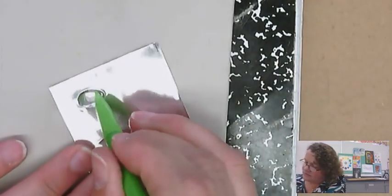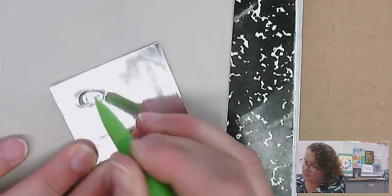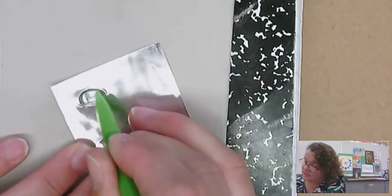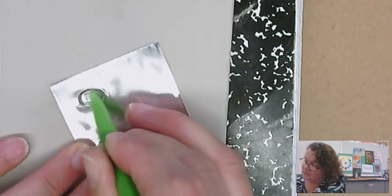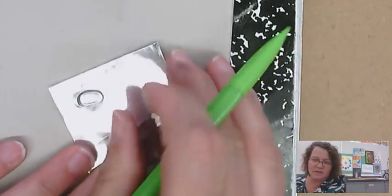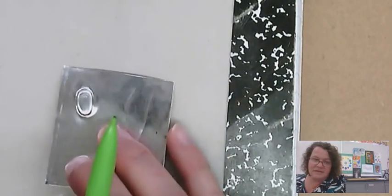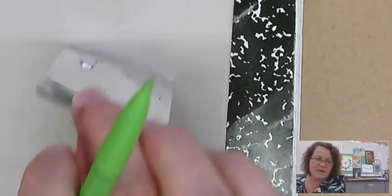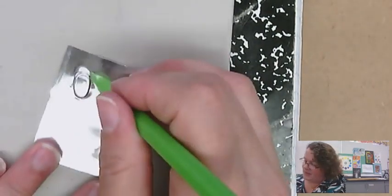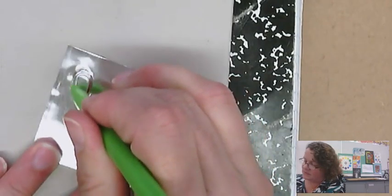And this is where you want to define the edges of the shape. I'm taking my pointy pencil and I'm going around the edges so it looks like the oval shape that I want it to look like. And then you can see it's really starting to pop out now, and I can even go back around and redefine the edges on this side, on the front.